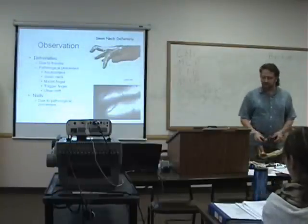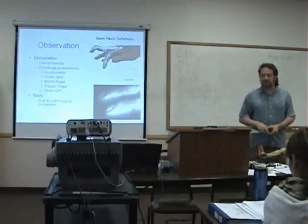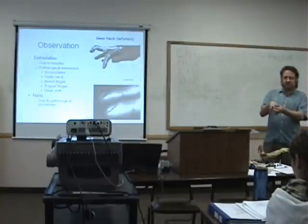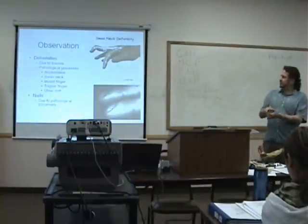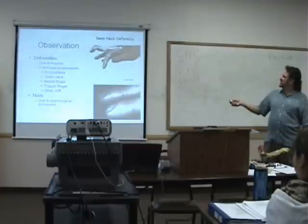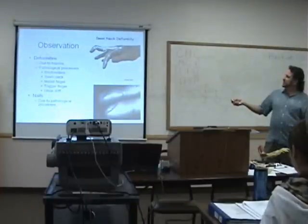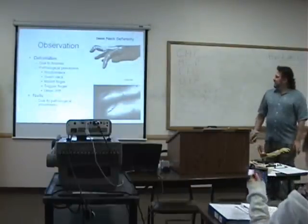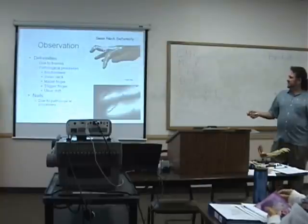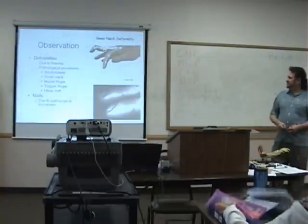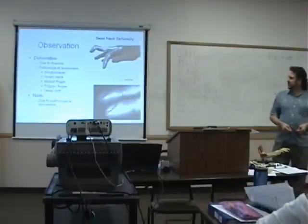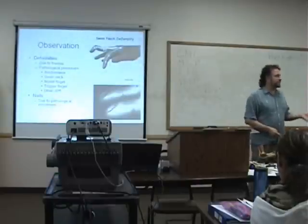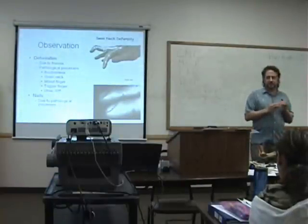Here's a swan neck deformity, which you see with rheumatoid arthritis, where the PIP hyperextends and the DIP flexes. So there's hyperextension at the PIP joint and flexion at the DIP. There are also other pathological findings to know about the hands, and the nails — different pathological processes or vitamin deficiencies can manifest in the nails.